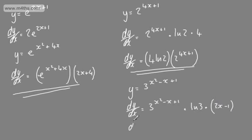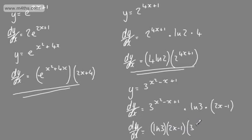So if we just tidy this up, dy by dx will be equal to the natural log of 3, multiplied by 2x minus 1, multiplied by 3 to the power of x squared minus x plus 1. So that is the derivative.